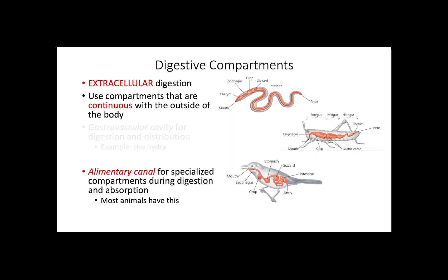The other highly specialized digestive compartment is the alimentary canal. Most animals, including humans, have this type of compartment. Alimentary canals are variable, as you can see in the three examples shown here. However, all of them keep the continuous nature of extracellular digestion, being the mouth the entrance opening and the anus the exiting opening. Organs like the esophagus, stomach, and intestines are also present, though they present differences in each species, making them specialized for the nutritional needs of that specific animal.